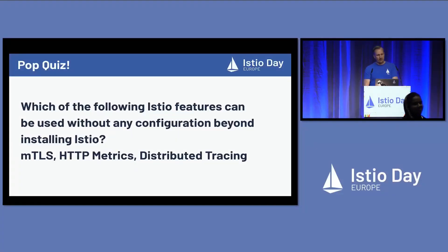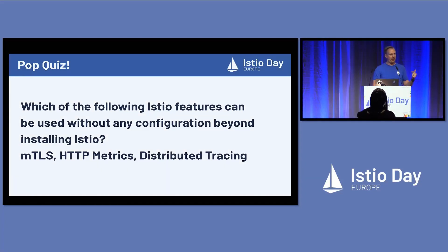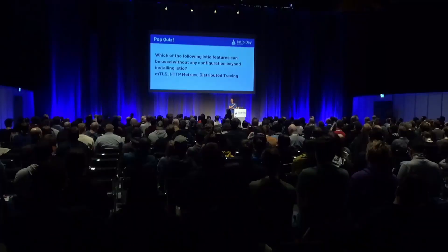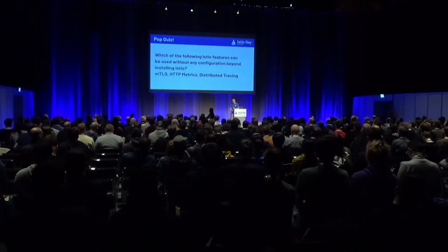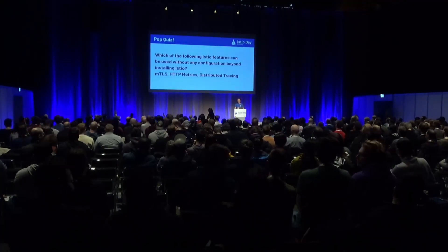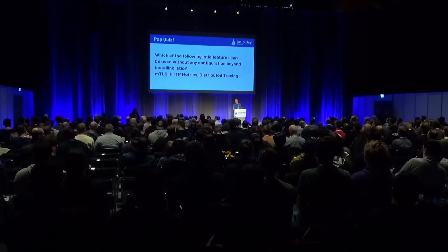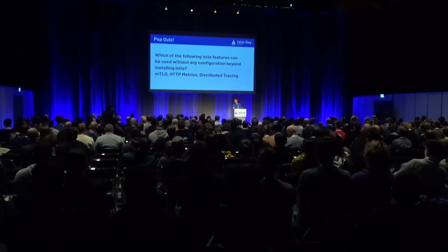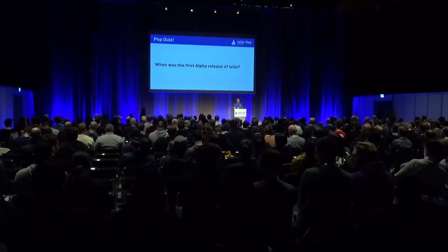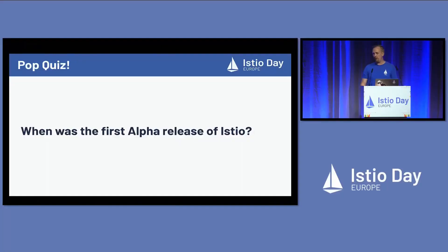We've got three Istio features listed here. Which of them can be used without any configuration beyond installing Istio? MTLS, HTTP metrics, or distributed tracing — choose all that apply. The answer: MTLS and HTTP metrics. Distributed tracing does require you to do header propagation, so there's a little bit of configuration needed to take advantage of that.